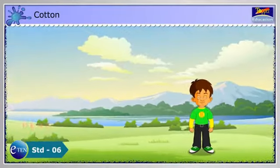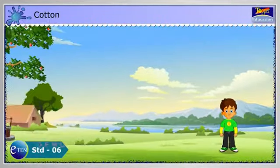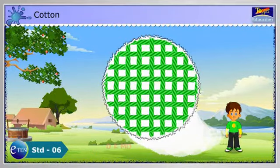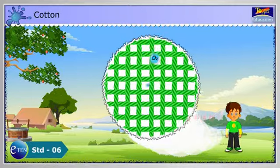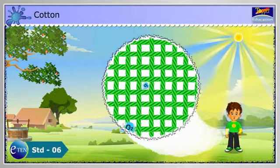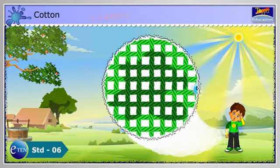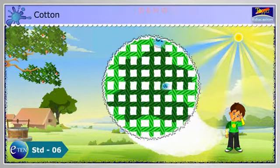Cotton fabric is soft and comfortable to wear. It lets air to pass through it. The sweat absorbed by cotton fabric evaporates and thus it cools the body. That is why it is called a breathing fabric.